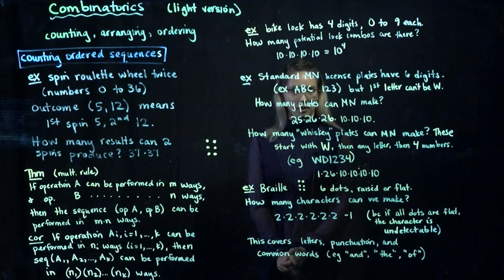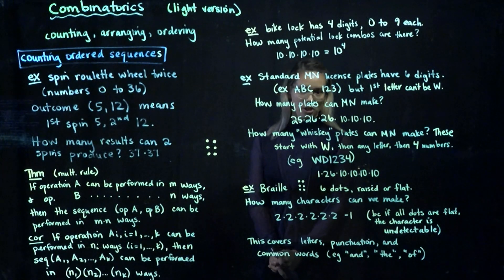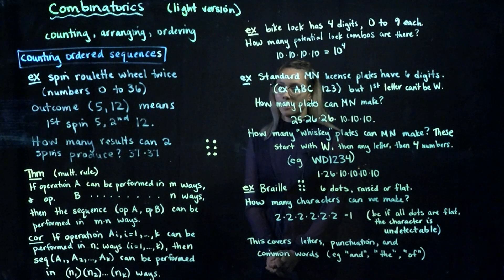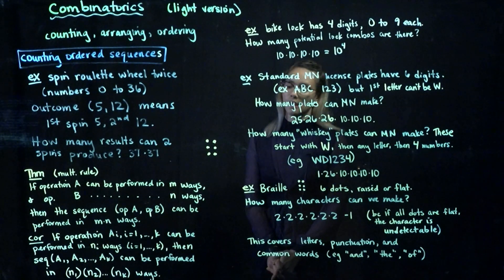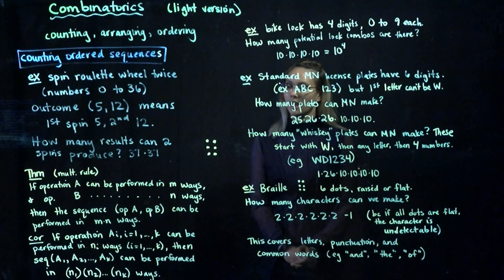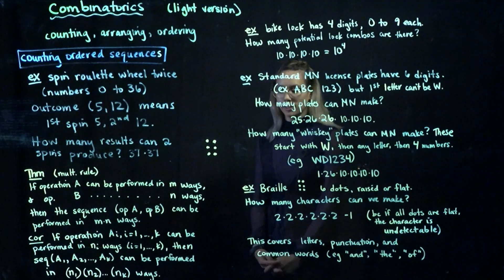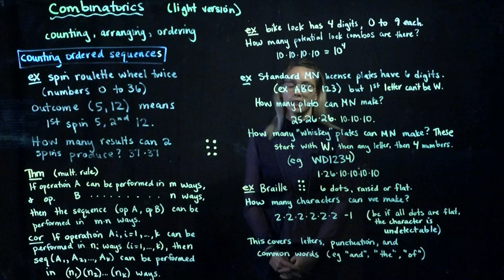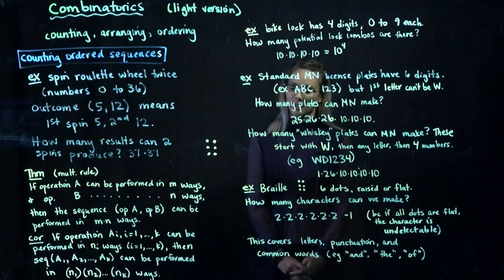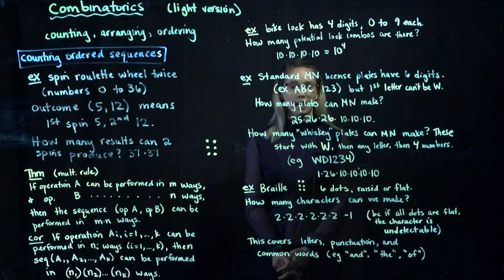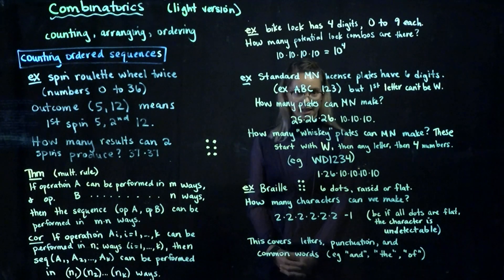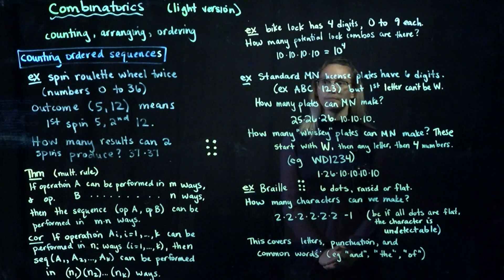This leads us to a theorem called the multiplication rule. If we have two operations A and B, and operation A can be performed in m ways and operation B can be performed in n ways, then the sequence (A, B) can be performed in m times n ways. A corollary extends this: if we have operations A_i for i going from 1 to k, each performed in n_i different ways, then the sequence A_1, A_2, through A_k can be performed in n_1 times n_2 times ... times n_k different ways.